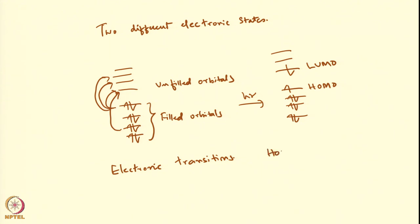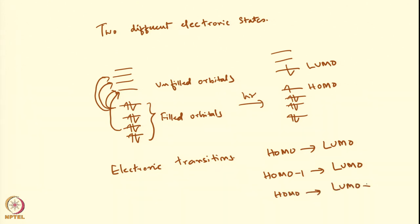One can have HOMO to LUMO, or HOMO minus 1 to LUMO, or HOMO to LUMO plus 1. So we have HOMO minus 1, HOMO minus 2, HOMO minus 3, and correspondingly LUMO plus 1, LUMO plus 2, and so on. One can have many, many combinations. The HOMO to LUMO transition is the lowest energy possible transition.